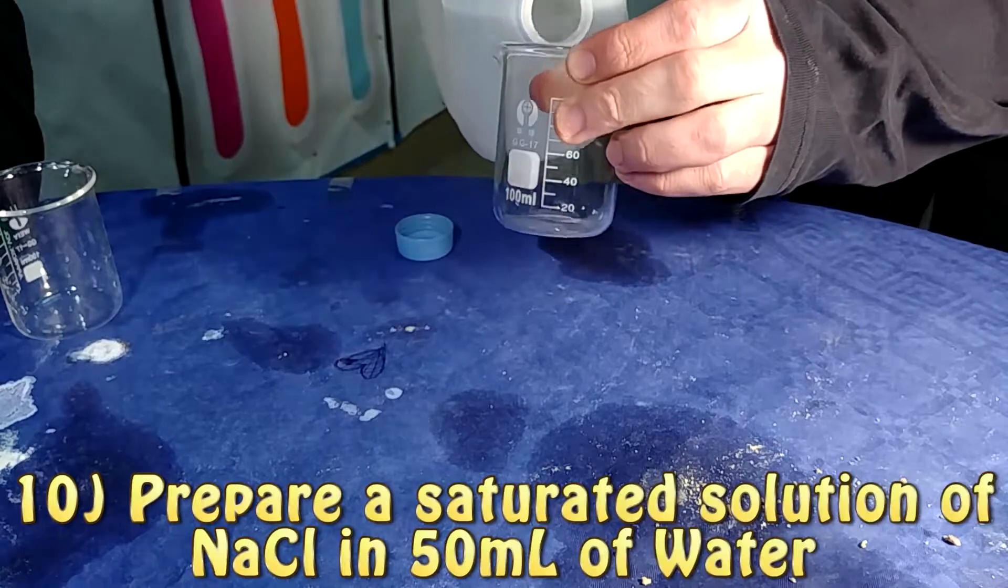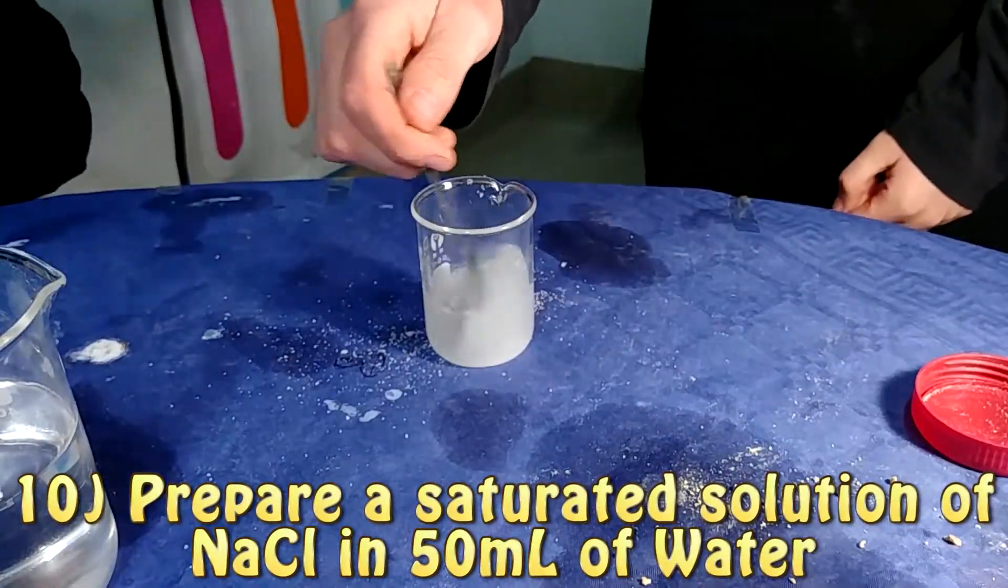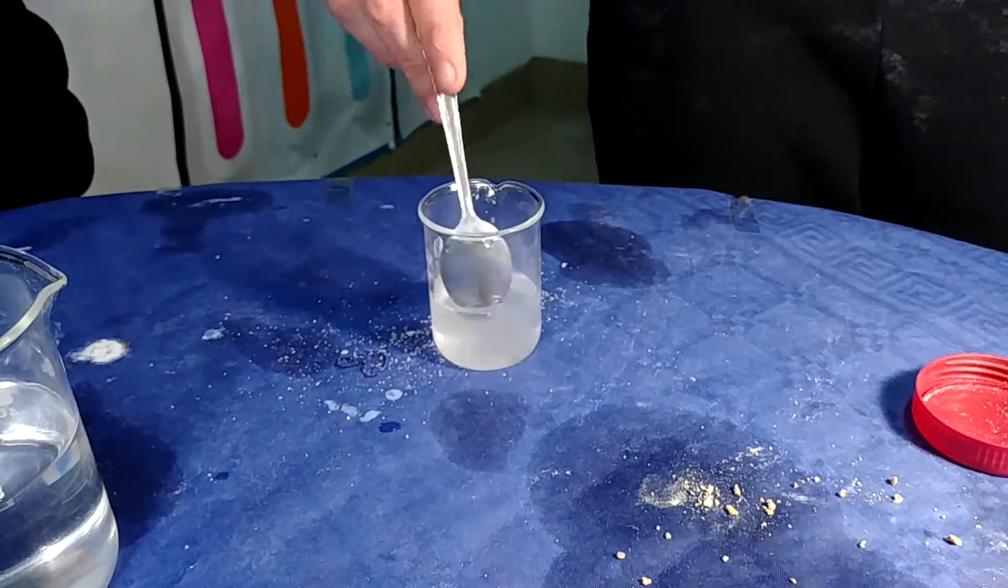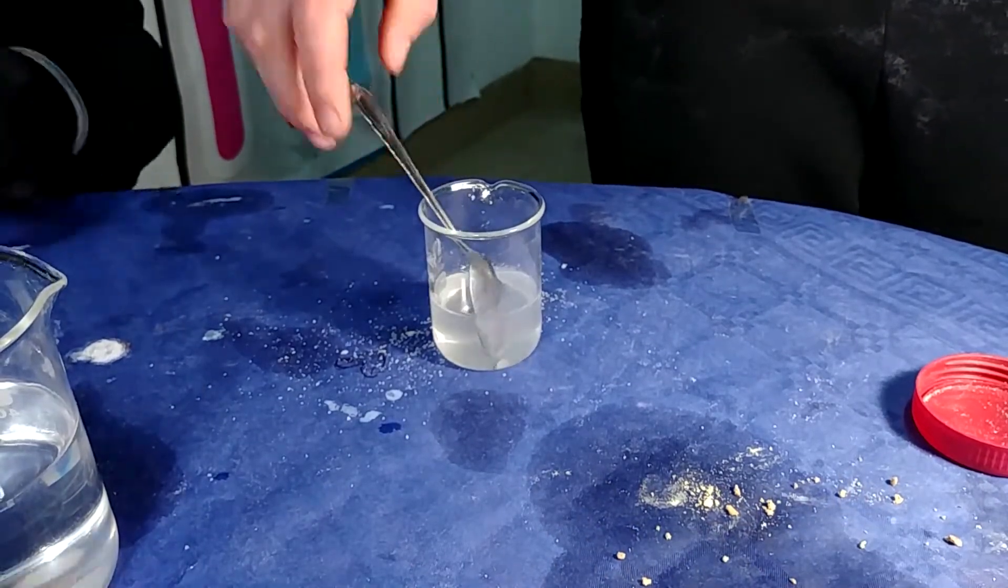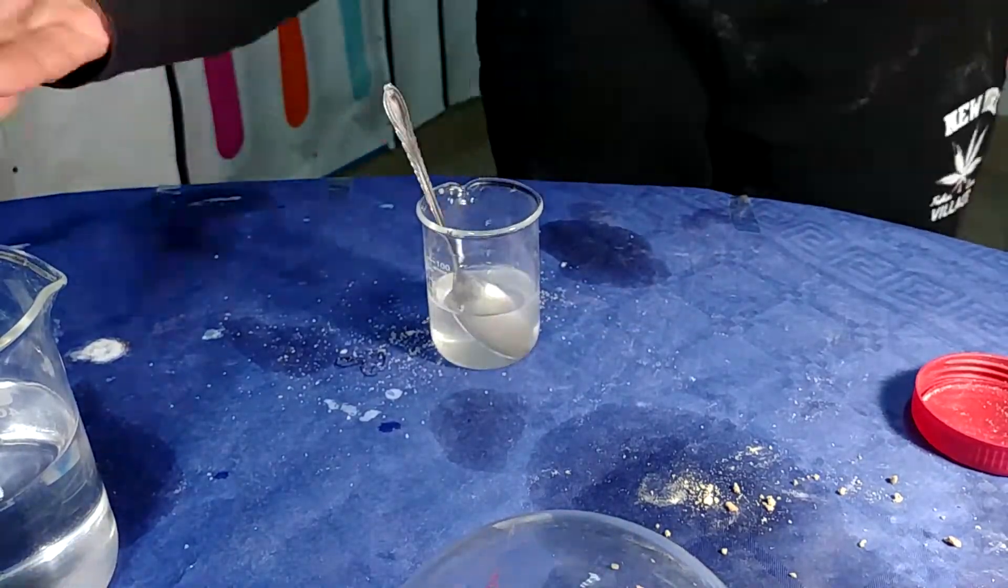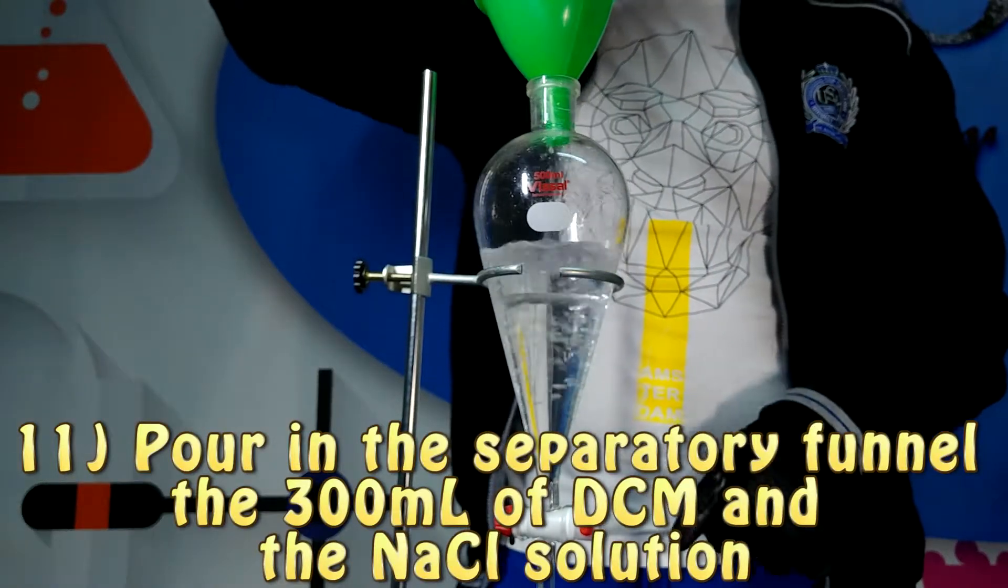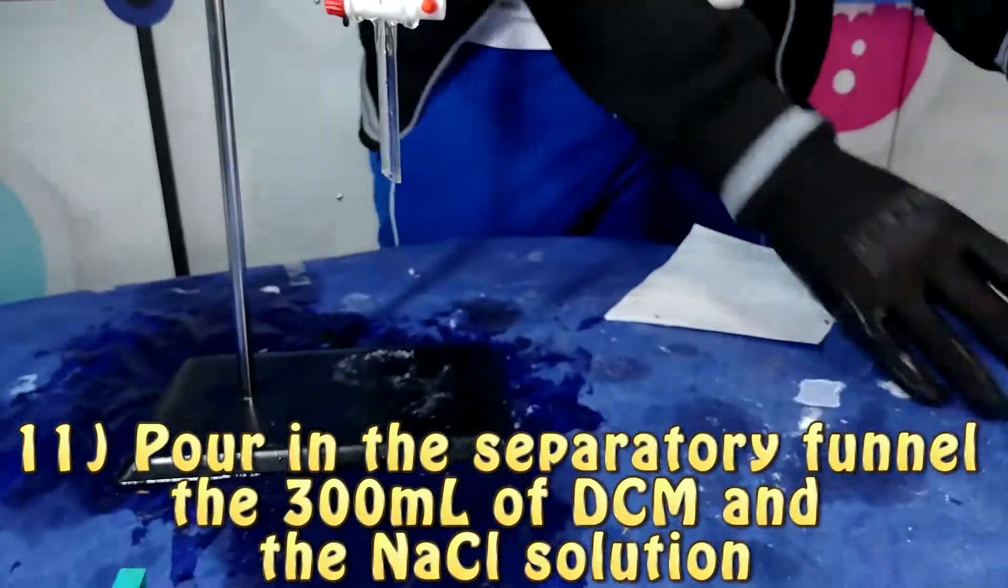So the next step for our experiment is to prepare a saturated solution of sodium chloride. Then we are going to add this solution to our separatory funnel where we find our dichloromethane. We are going to mix everything and then we are going to leave the two solutions separate from one another.